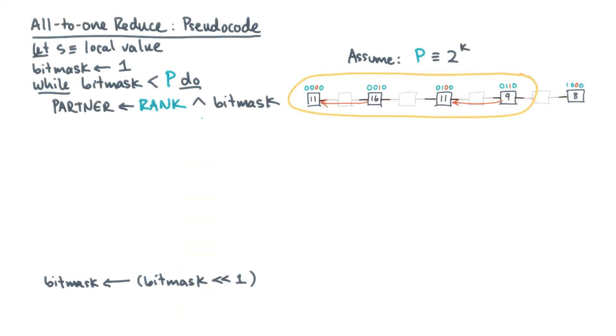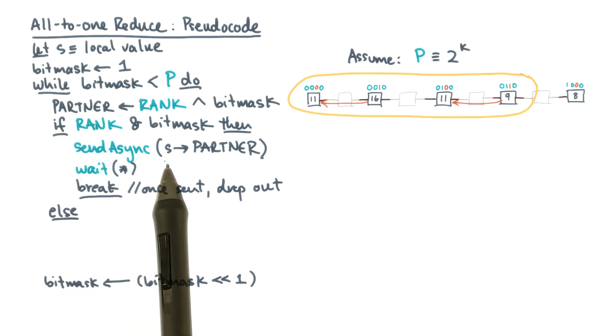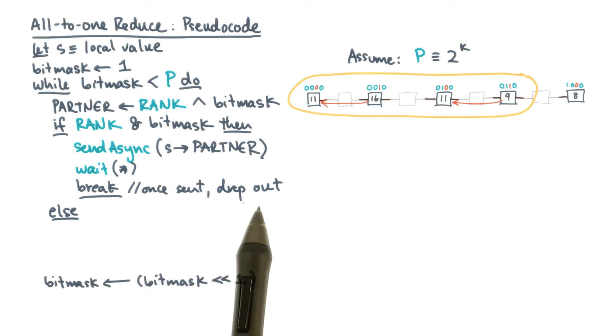Remember that senders had a 1 in the current bit position. So if you're a sender, you need to send a message. So if s is our local value, then the send can just send that value to a partner and then wait. Once the send is complete, the sender drops out.